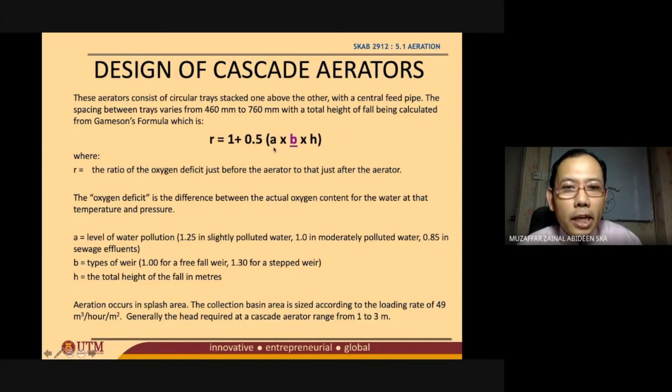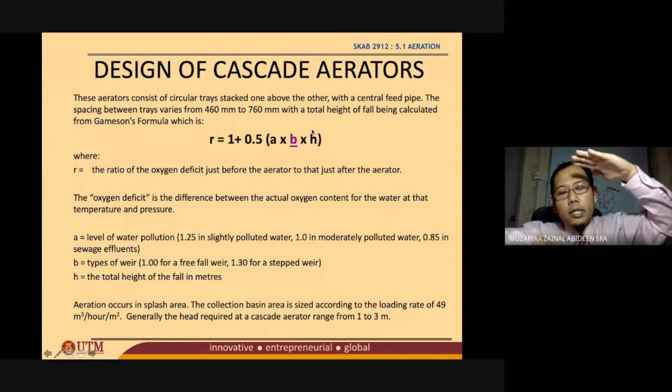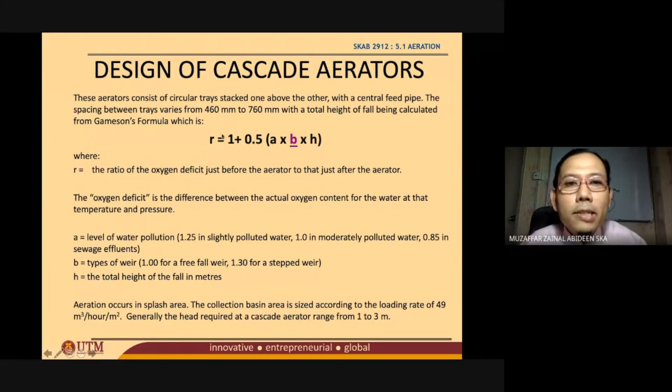So now I have explained A is the type of pollution of the water, this one is the type of weir, and this one is the height of the cascade aerator. So what is R?